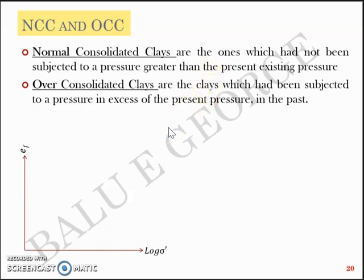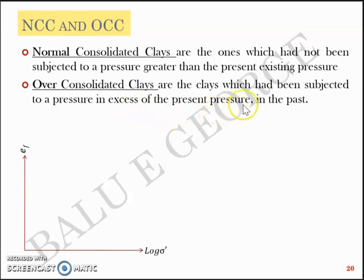When you talk about over consolidated clay, let's take the same example. Let's assume that you have a six-storied building at a particular site. You demolish that six-storied building and later the structure you build is just three stories. The soil had earlier been subjected to a load from six stories, and now it's subjected to a lower load of three stories. Such clays will behave as over consolidated clays — subjected to a pressure of six stories in the past, in excess of the present pressure of three stories.